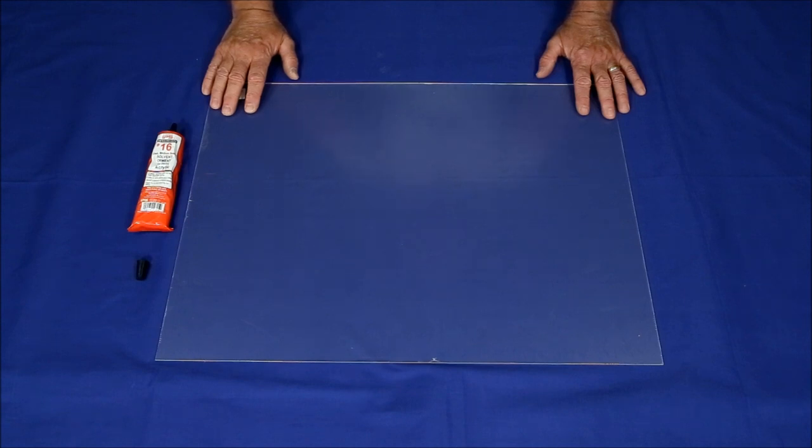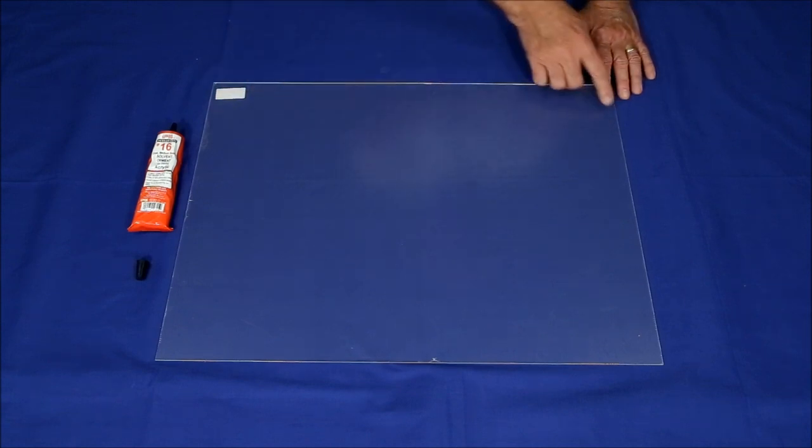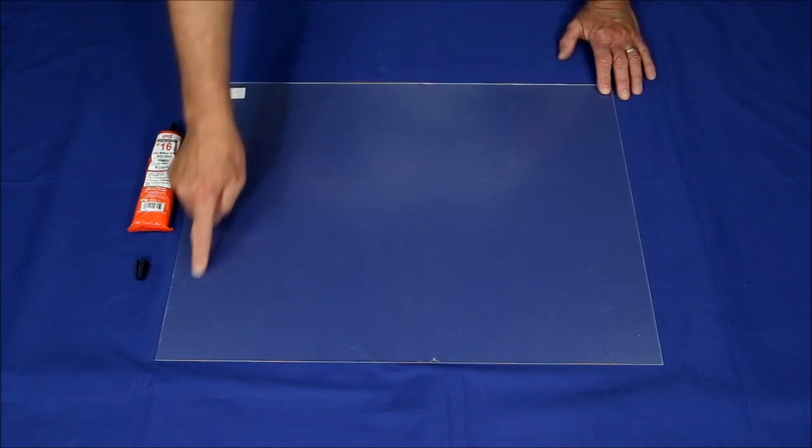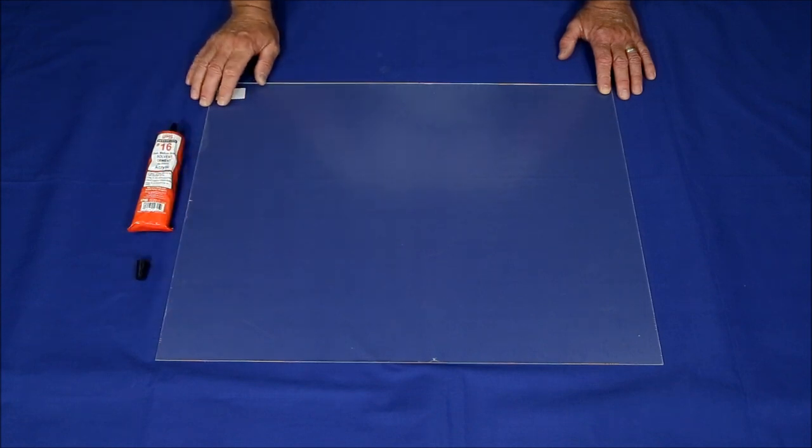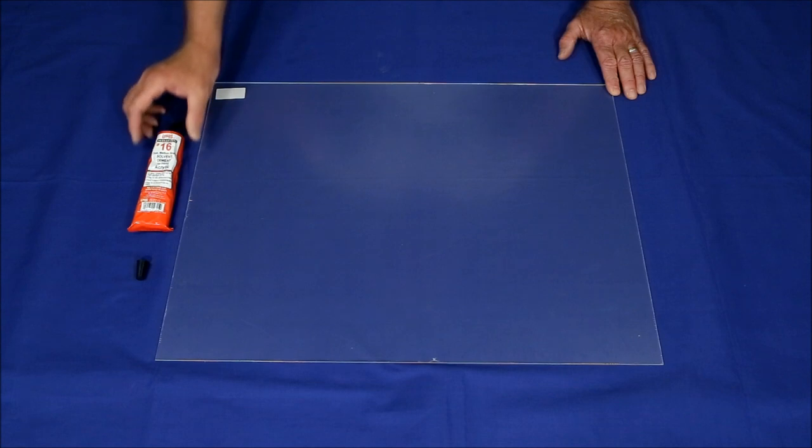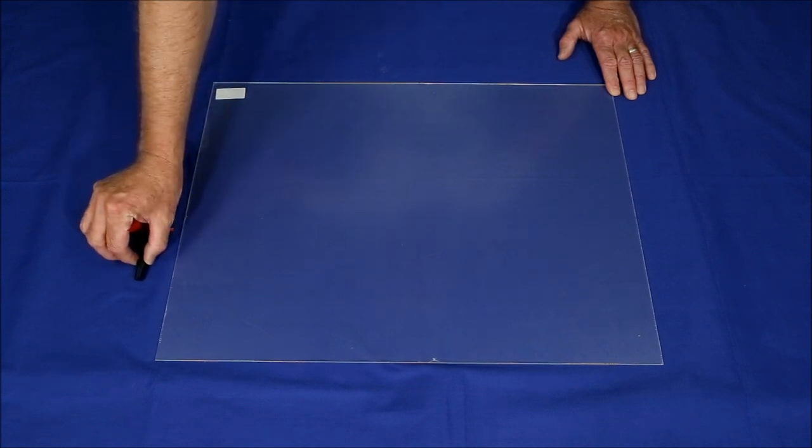First up, we make the wave cell. We'll need a 24 by 18 inch piece of plexiglass, nominally around a tenth of an inch thick, some plexiglass solvent cement, and a small rubber cork.